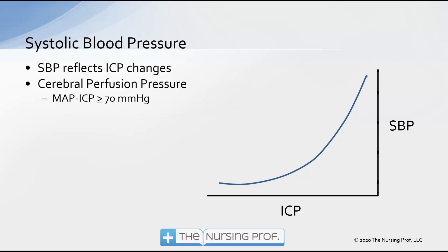For example, if a patient has a normal blood pressure of 120/80, their mean arterial pressure is roughly 90. Subtracting an intracranial pressure of 5 gives a cerebral perfusion pressure of 85 — greater than 70, so that's normal. However, if the patient is in shock with a mean arterial pressure of 50 and a head injury with intracranial pressure of 20, then 50 minus 20 gives only 30 — not adequate cerebral perfusion pressure. The body will attempt to increase systolic blood pressure to maintain that cerebral perfusion pressure.